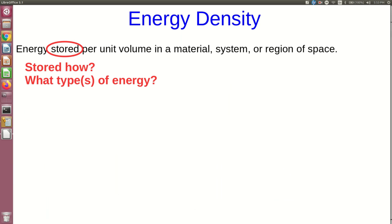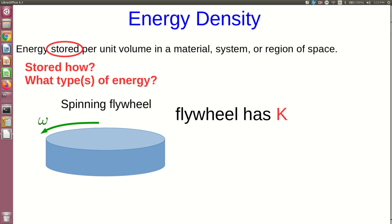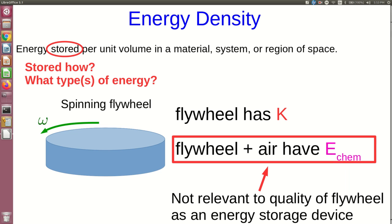In contrast, let's think of a different example. Suppose instead we're talking about a spinning flywheel. Various devices use flywheels to store energy, and the flywheel has kinetic energy. It's the motion of the flywheel that is used to store the energy. Now admittedly, the flywheel, if unmaintained, will eventually oxidize, reacting with the air, and so it could be said to have some chemical energy. But again, that's irrelevant if what we're thinking about is the quality of the flywheel as an energy storage device, and so it would be the kinetic energy density that we would be interested in.